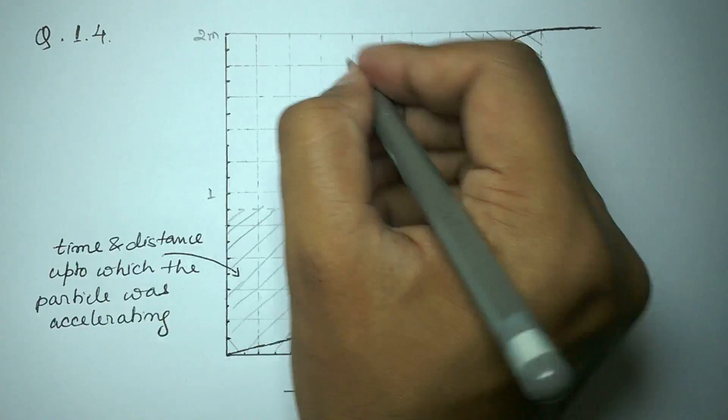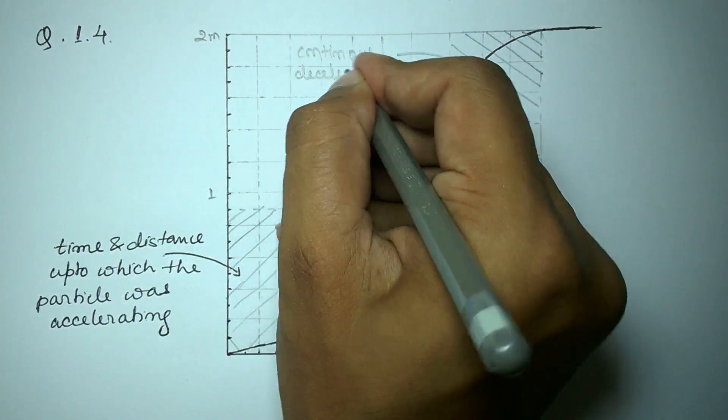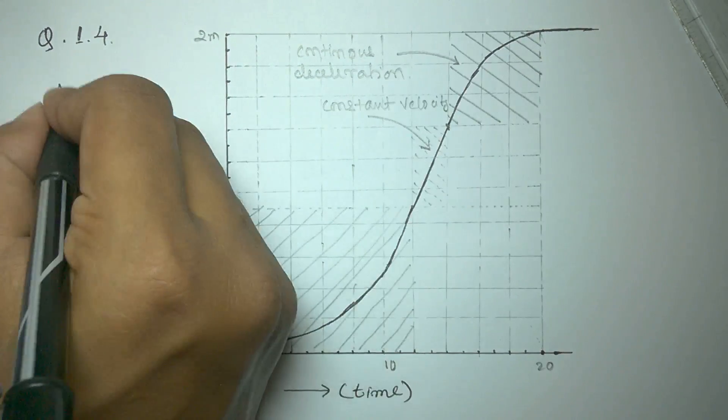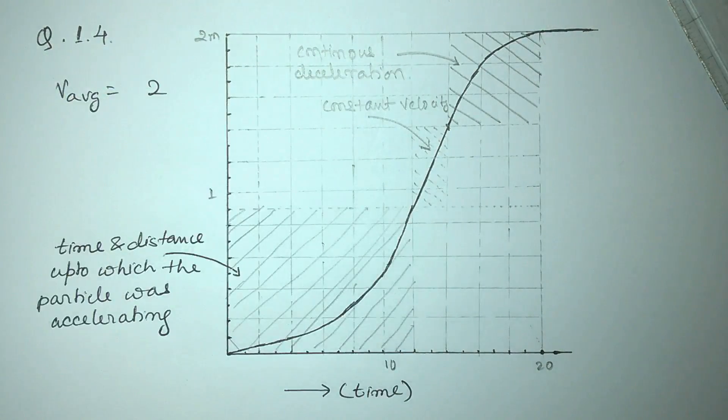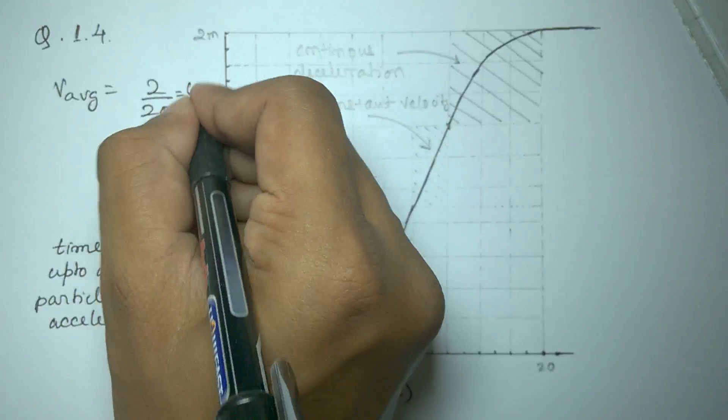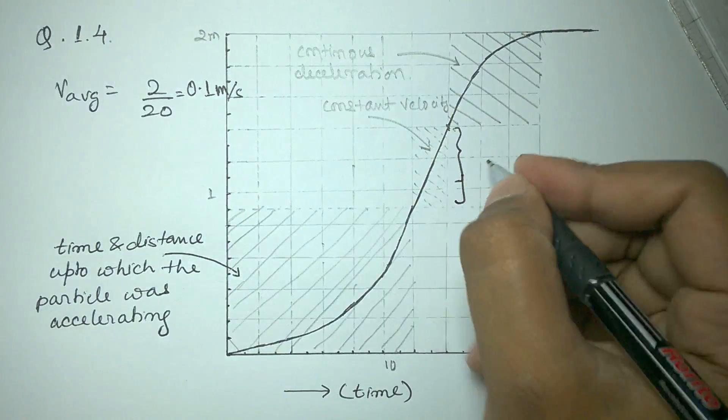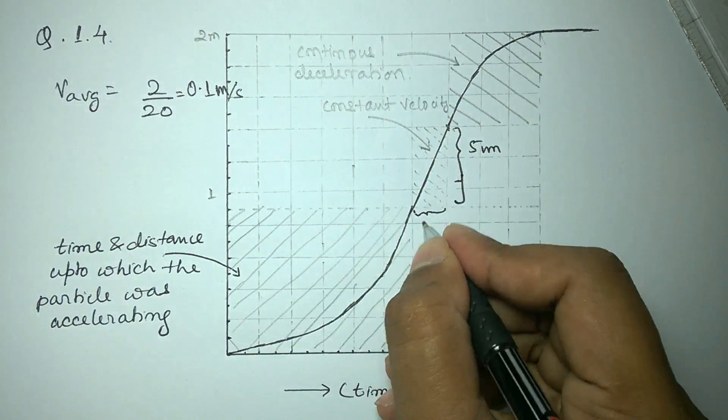The average velocity can be calculated by calculating the ratio of total distance covered to the total time taken, that is 2 meters in 20 seconds, which will give us 0.1 meters per second.